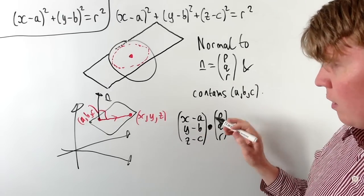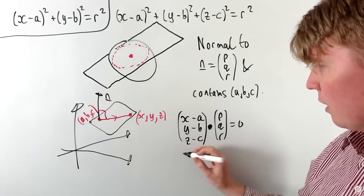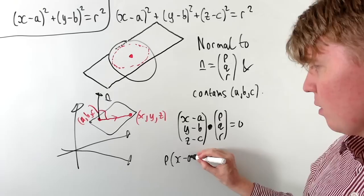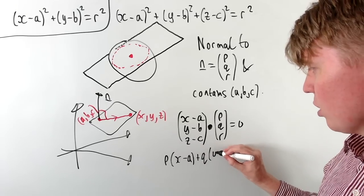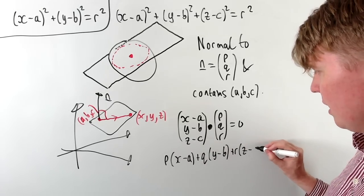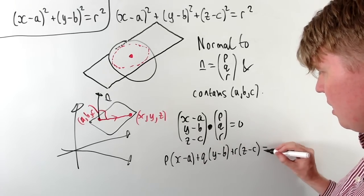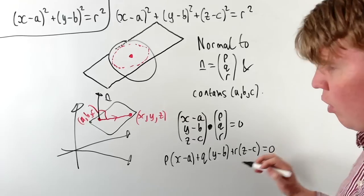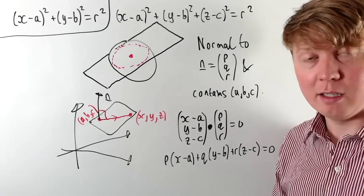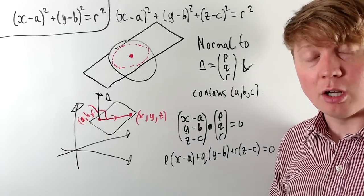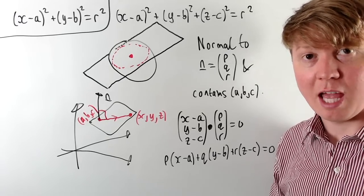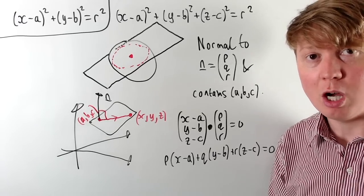We can expand this out, multiplying each of the pairs: p(x − a) + q(y − b) + r(z − c) = 0. This gives us the equation of a plane containing the point (a, b, c) and normal to the vector n with components (p, q, r).